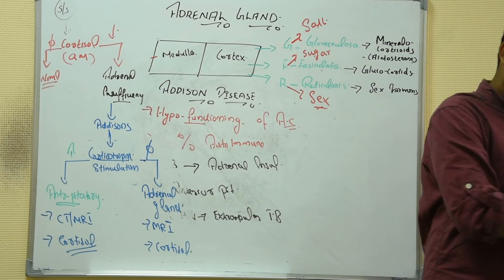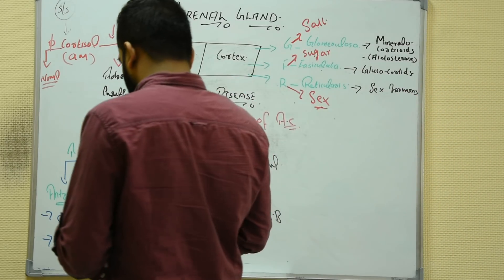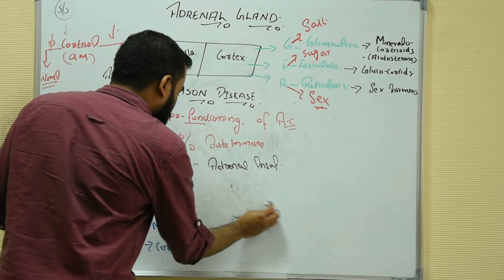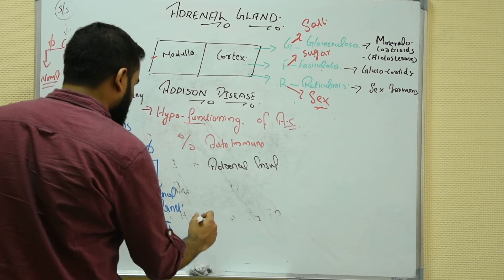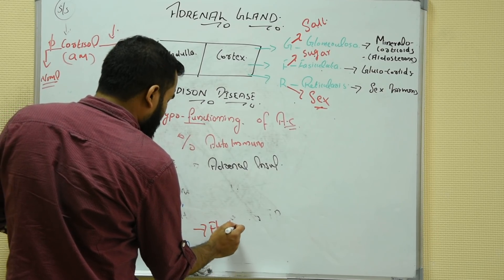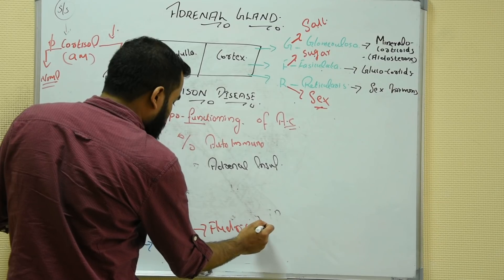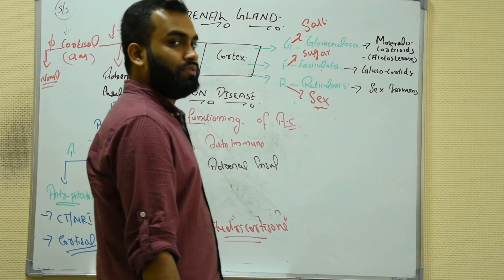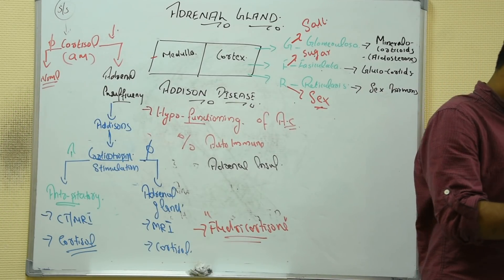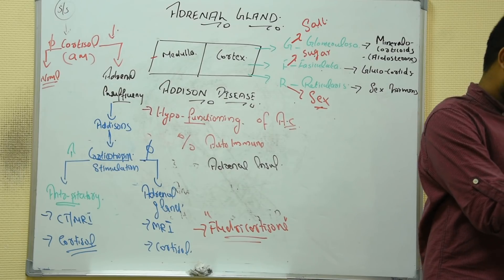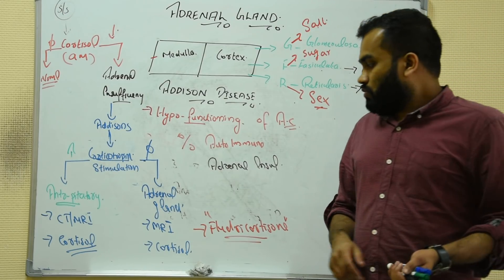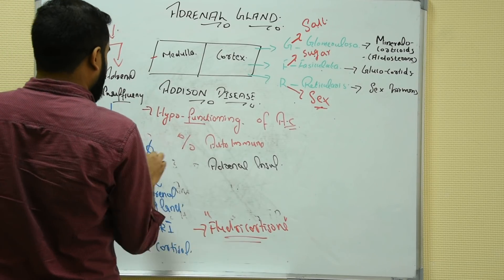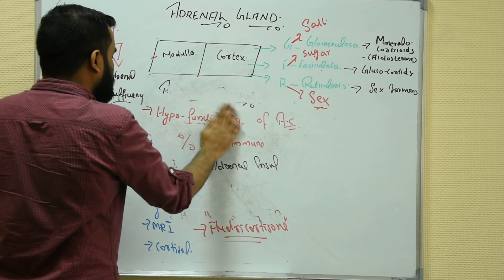There is an important drug asked in every exam: for adrenal gland insufficiency, the drug we give is called fludrocortisone — a steroid drug given when the problem is with the adrenal gland. Another cause of adrenal insufficiency is being a chronic steroid drug user.